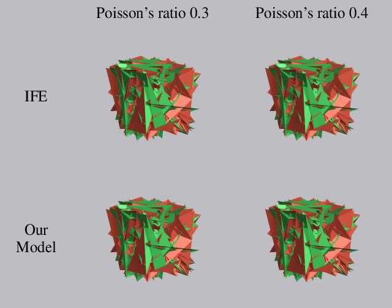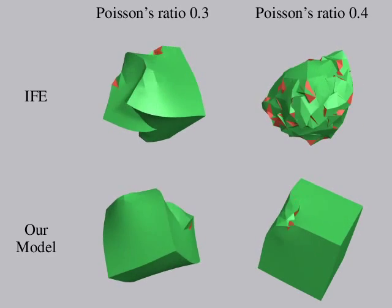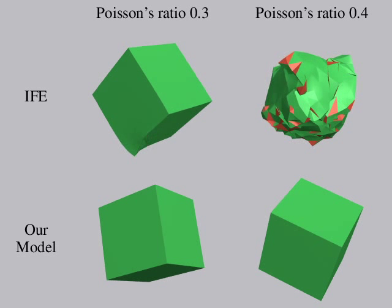We perform another test where we randomly arrange the vertices of the cube mesh and again allow the cube to attempt to relax to its initial state. As before, our model resolves itself in both instances while the IFE implementation does not fully resolve for higher Poisson's ratios.